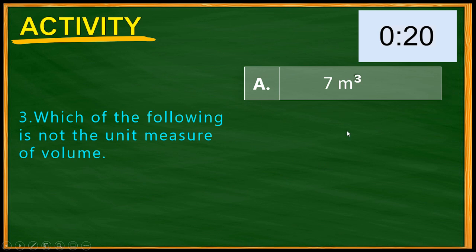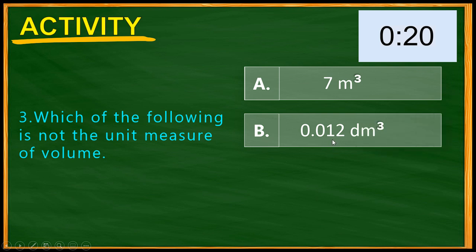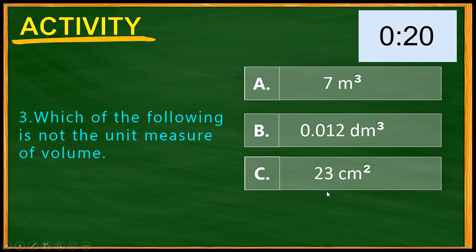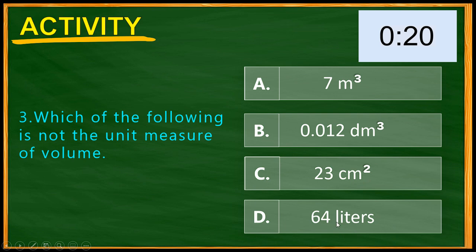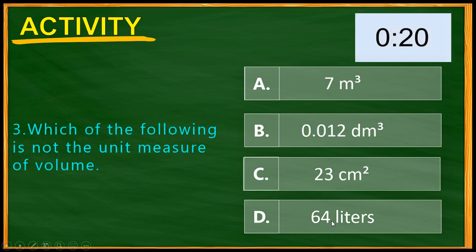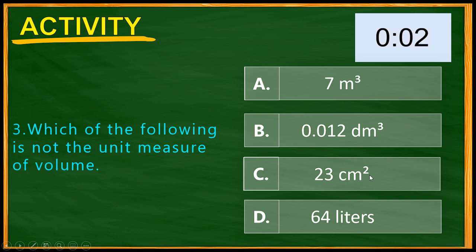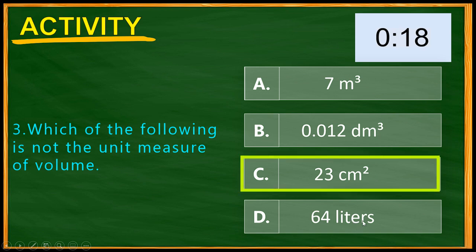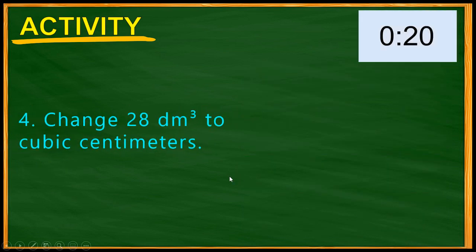Question 3: Which of the following is NOT a unit of measure for volume? A) 7 cubic meters, B) 12,000 cubic decimeters, C) 23 centimeters squared, D) 64 liters. You have 20 seconds. Time's up! The correct answer is C — 23 centimeters squared is not a unit of volume.